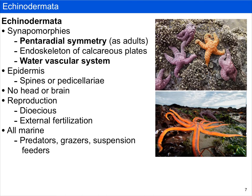In terms of reproduction, echinoderms are dioecious, so there are separate male and female individuals, and they have external fertilization. All of them are marine, and they are predators, grazers, or suspension feeders.